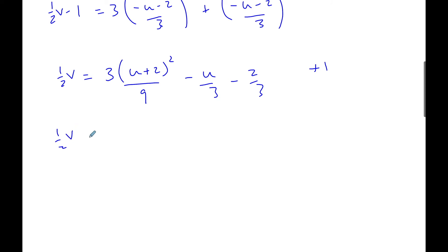1 half v is equal to, so I'm going to get u squared, double the product 4u plus 4. Each of these are divided by 3 minus u over 3 minus 2 thirds plus 1.